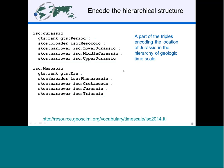Other triples encode the location of Jurassic in the hierarchy of the geological time scale. Using SKOS properties: Jurassic has a broader concept — Mesozoic — meaning Mesozoic is at a higher level. Jurassic has three narrower concepts: lower, middle, and upper Jurassic. Mesozoic itself has a broader concept — Phanerozoic — and three narrower concepts: Cretaceous, Jurassic, and Triassic.